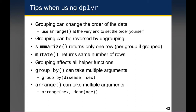A few tips for using dplyr: grouping can change the order of data, so I tend to use arrange at the very end of my pipe to set the order — sometimes alphabetical, sometimes sorted from highest to lowest or lowest to highest to illustrate the spread of numbers, whether that's mean age or counts. Grouping can be reversed by ungrouping, and while you almost never have to do it, if you do a group_by followed by mutate you might forget your data is still grouped and future commands will assume it.